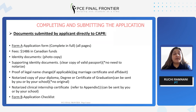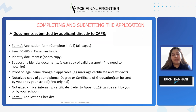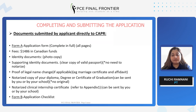The second form is Form B, which is also the application checklist. This is the part that the entire package goes together with. Form B basically has the list of all the documents that need to be sent along with Form A.